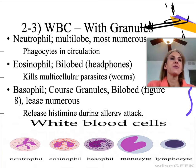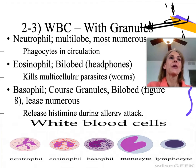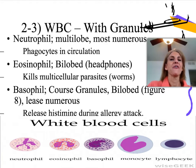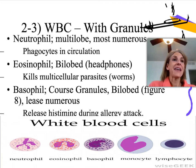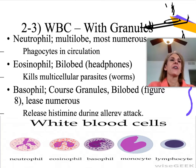The neutrophil — I like to remember the prefix 'neutra,' meaning numerous. So they're the most numerous white blood cells and also multilobed. The picture on the furthest left at the bottom would be a neutrophil. They're phagocytes, meaning they eat other cells or particles in circulation. Neutrophils typically increase in number when you have an acute, sudden-onset infection, and they help clear it.